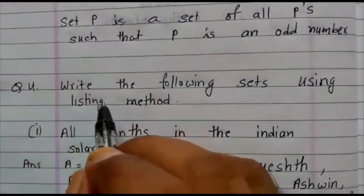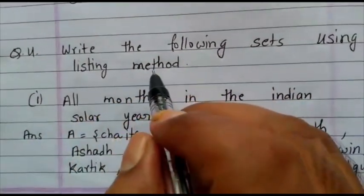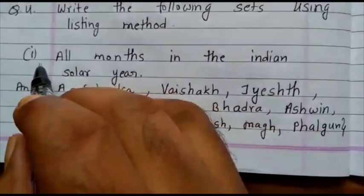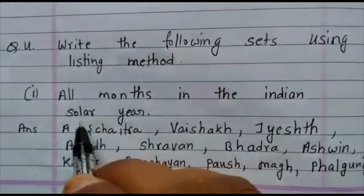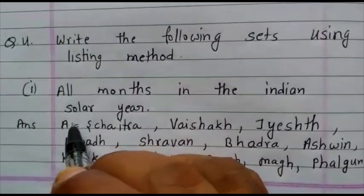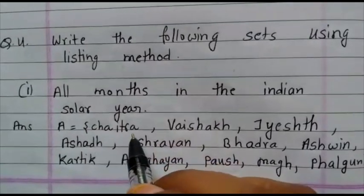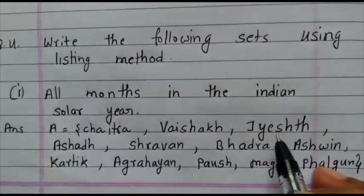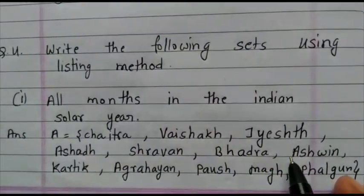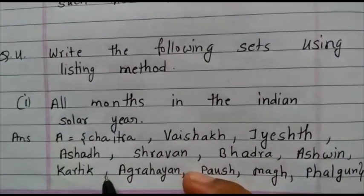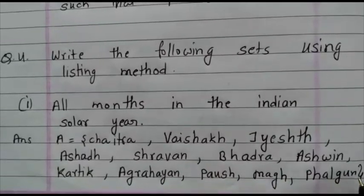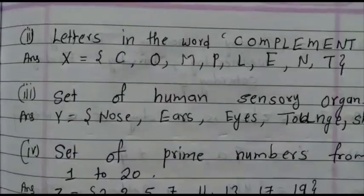Now come to question number 4. Write the following sets using the listing method. We already completed this method. Now see some sums here. All months in the Indian solar year. Solar year means month names. How to write set A equals, in the curly bracket, Chaitra, Vaisak, Jest, Ashar, Shravan, Bhadra, Ashwin, Kartik, Agahan, Posh, Mag, Falgon. This way we have to write the answer.